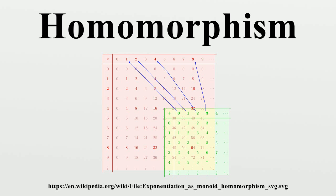For example, a group is an algebraic object consisting of a set together with a single binary operation satisfying certain axioms. If G and H are groups, a homomorphism from G to H is a function f such that f(g₁·g₂) = f(g₁)·f(g₂) for all elements g₁, g₂ in G. Since inverses exist in G and H, one can show that the identity of G maps to the identity of H and that inverses are preserved.